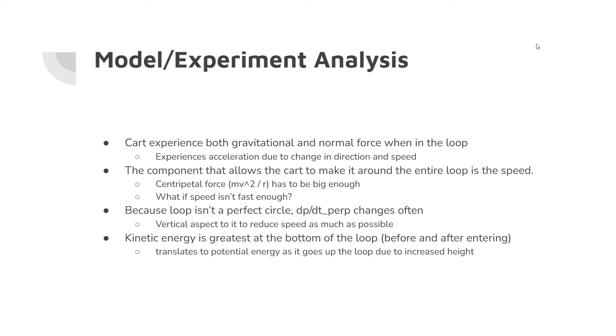Another thing to point out is that the loop isn't a perfect circle. So dp/dt, the perpendicular changes quite often, mv squared over r or v squared over r. The radius is obviously changing. And the vertical aspect to it reduces the speed as much as possible.